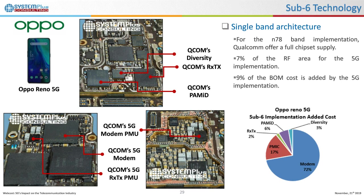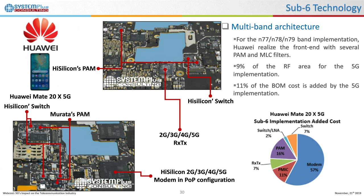The third architecture is for Huawei, which has two particularities: first, all communication protocols are regrouped into one modem and one transceiver; second, Huawei decided to integrate three sub-6 band compatibility. To achieve this complexity, more components like power amplifier modules and filters are required, resulting in almost 10% increase in area due to 5G implementation, and 11% added cost of the BOM. The modem represents 60% of the added cost.